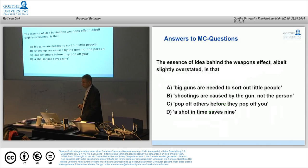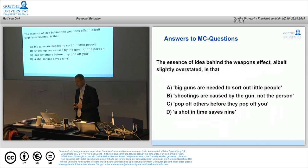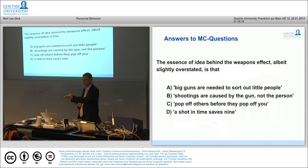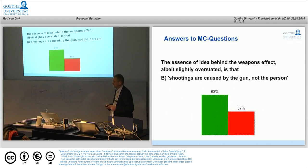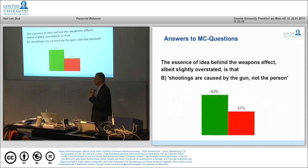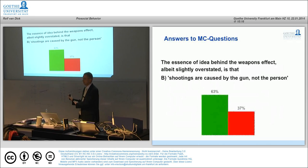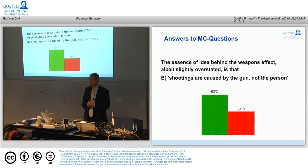The essence of the weapons effect, slightly overstated, is that shootings are caused by the gun, not the person. Obviously this is overstated, but the weapons effect says whenever aggressive cues are around this makes it more likely that people act aggressively themselves, particularly so when they are frustrated before they enter a situation in which aggressive cues are present.